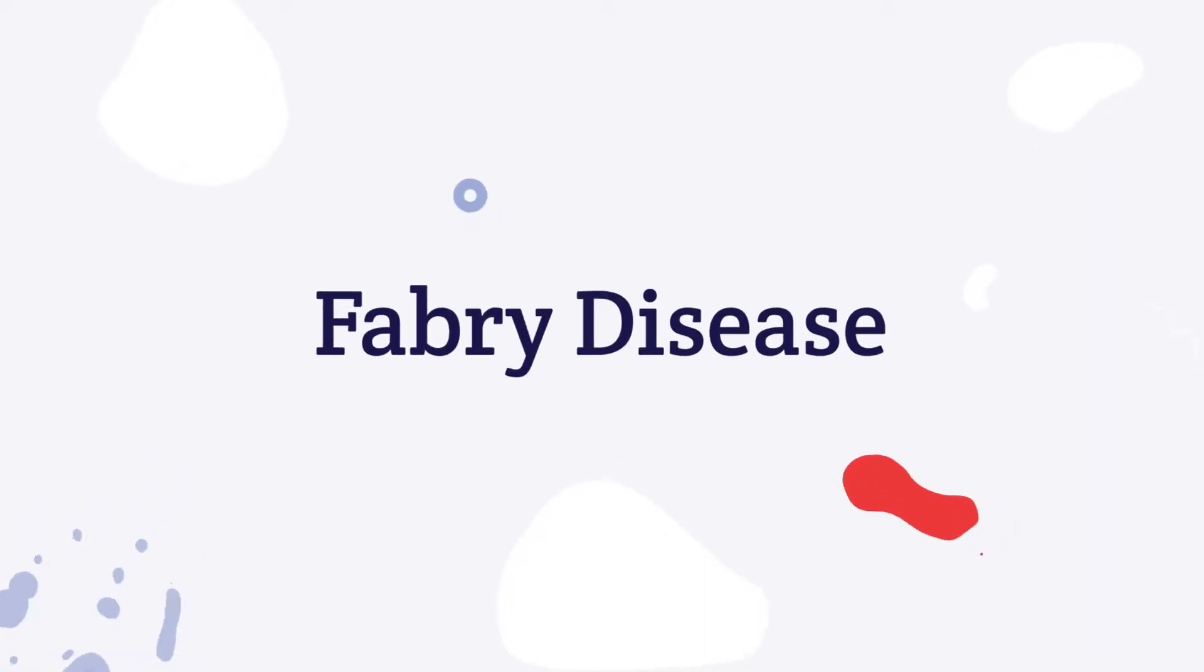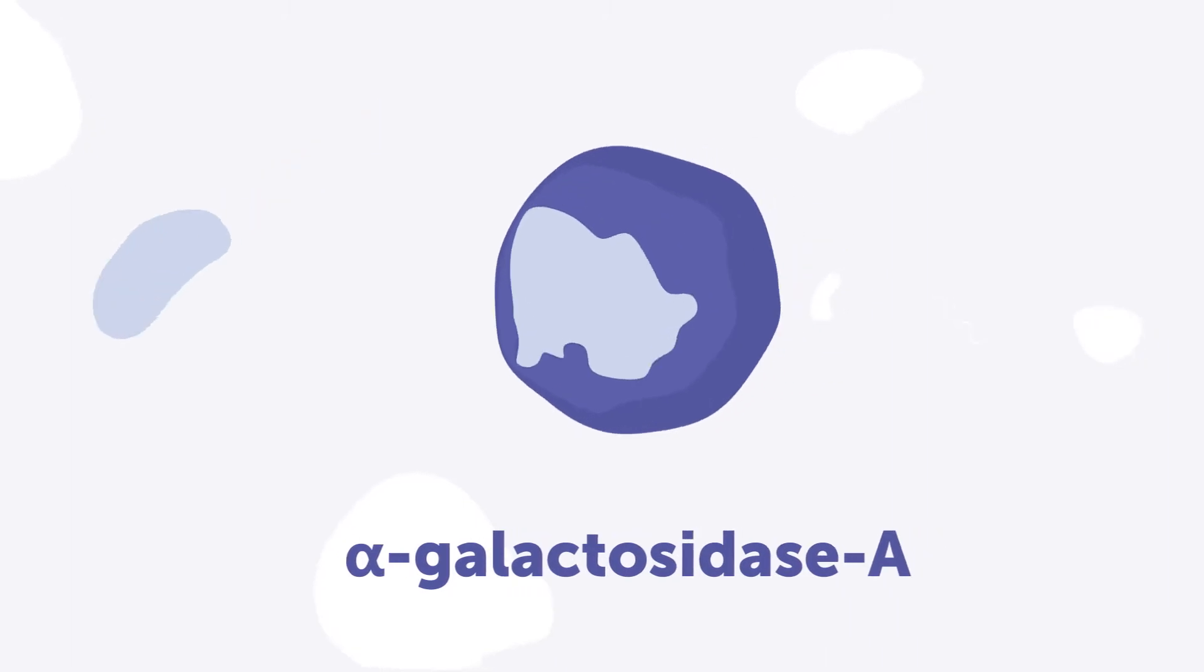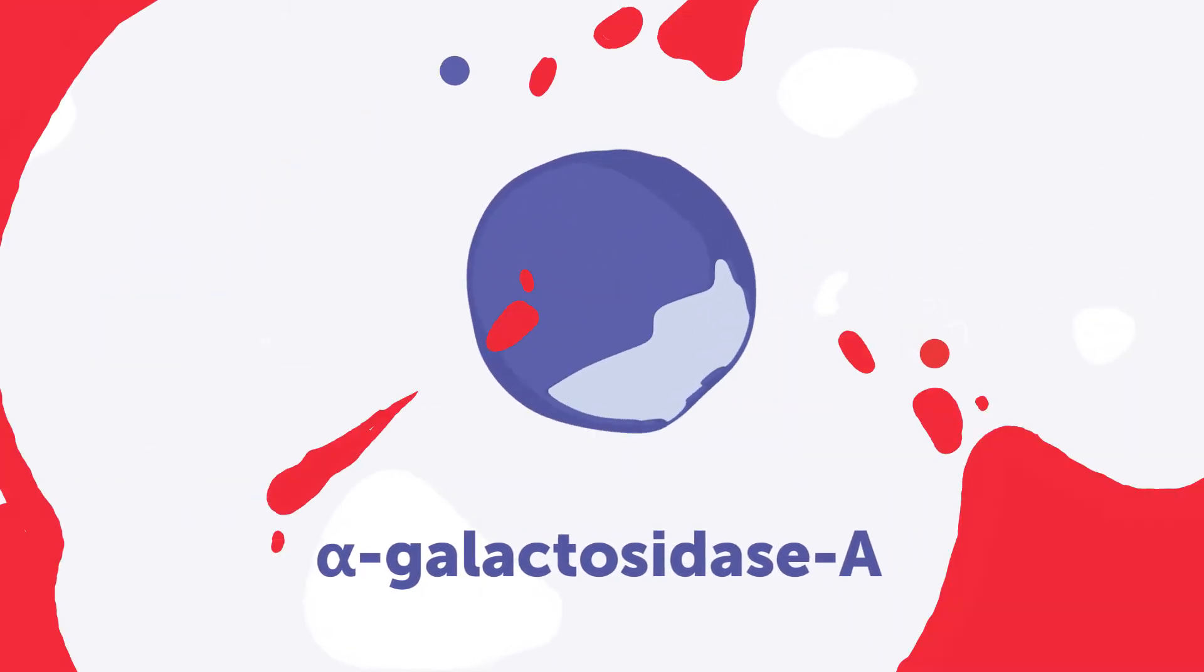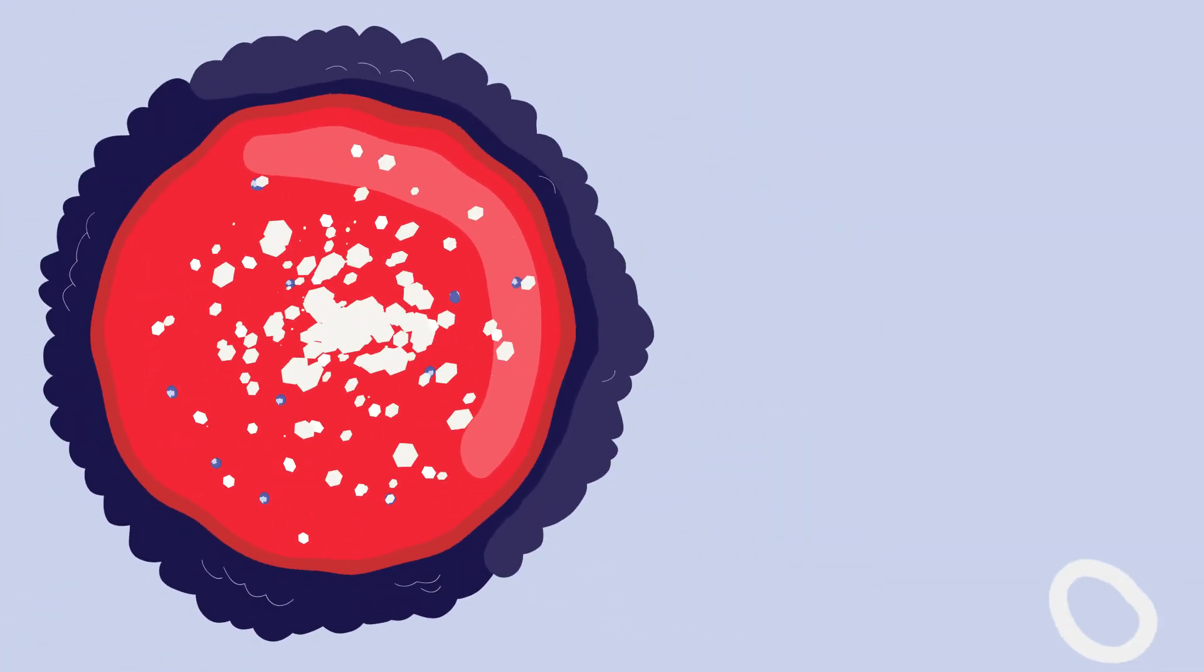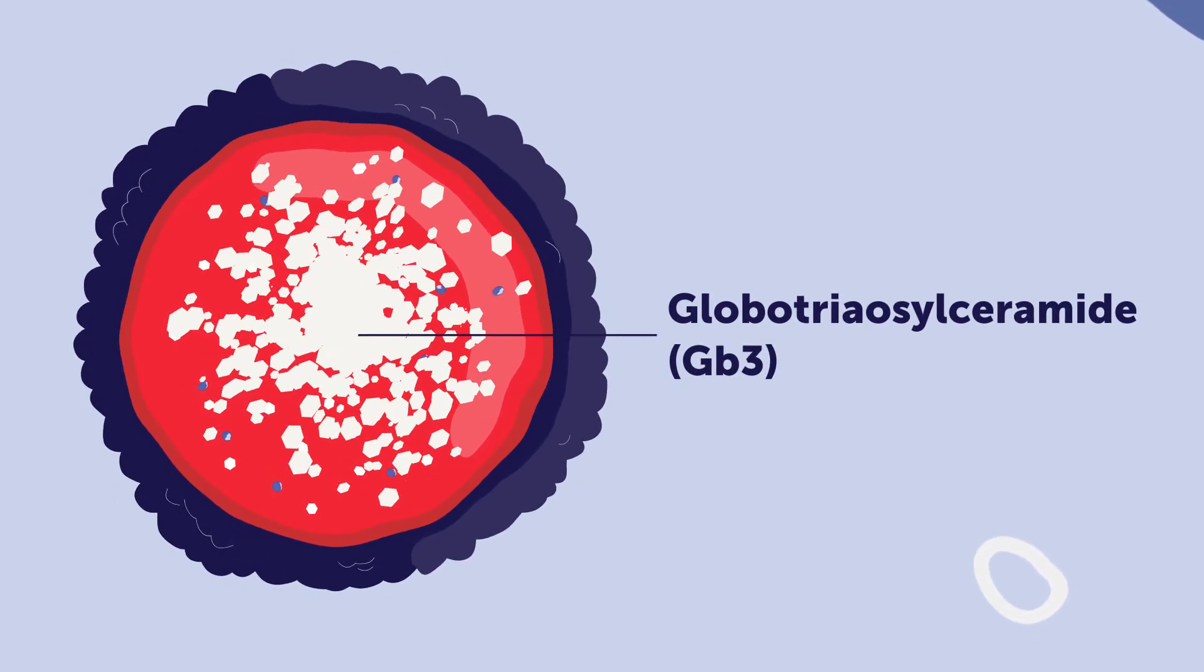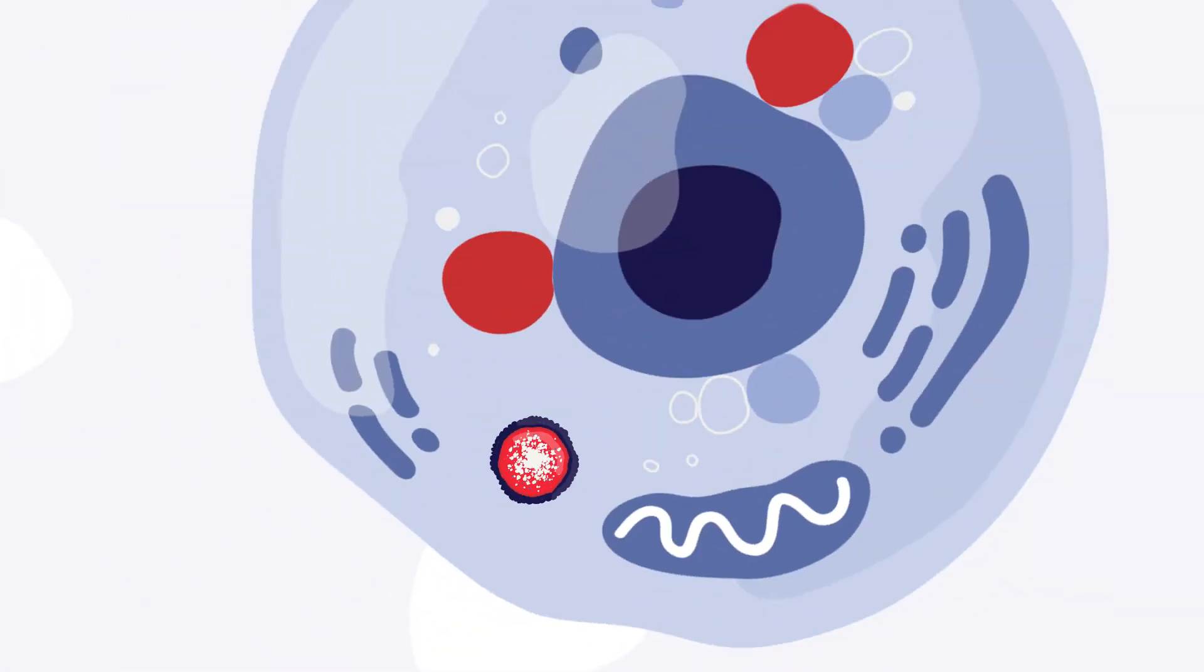Let's talk about Fabry disease. It's a rare inherited disorder caused by a lack of the enzyme alpha-galactosidase A, resulting in the accumulation of a sugary fat called Globotriaosylceramide, or GB3, in the body's cells and tissues.